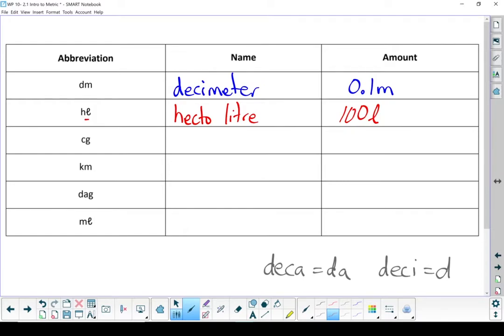CG. Next one. Well, that G stands for gram. And C stands for centi. That's a centigram. And there are a hundred centigrams in a gram. So it's 0.01 grams.